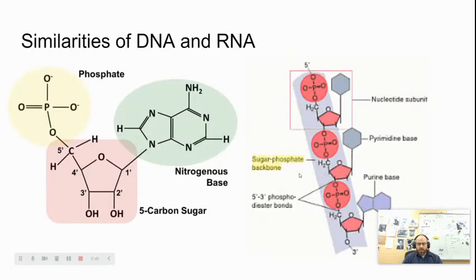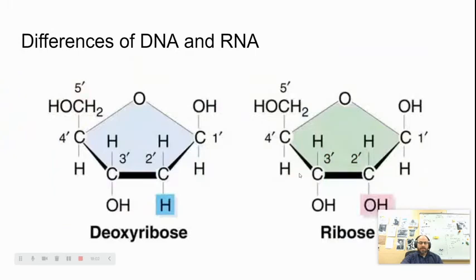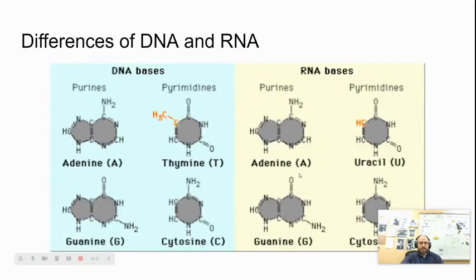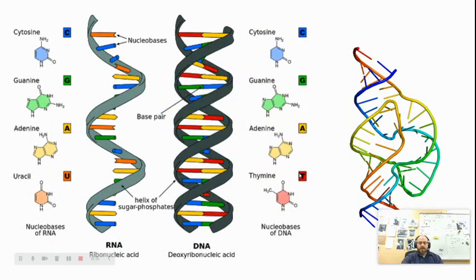That brings us to 1.6: nucleic acids, a short section. Phosphate, nitrogenous base, and a 5-carbon sugar are what nucleic acids are made up of. DNA and RNA are similar, but the 5-carbon sugar is deoxyribose in DNA and ribose in RNA. Thymine is found in DNA, whereas uracil replaces thymine in RNA. RNA is single-stranded, whereas DNA tends to be double-stranded.